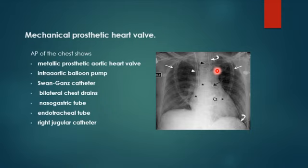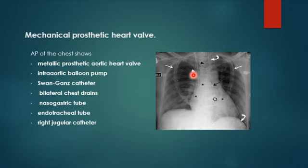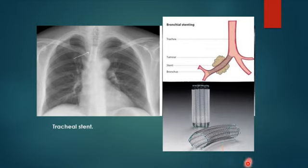This AP view shows a patient with a metallic prosthetic aortic valve. Drawing a line from the left atrial appendage downward, the valve is located above the line with its orifice toward the ascending aorta. This patient also has an intra-aortic balloon pump, an endotracheal tube, two chest drains, a Swan-Ganz catheter with a long loop toward the right side of the heart, a nasogastric tube to the stomach, and a right jugular central venous catheter. Multiple tubes require you to follow each type carefully.